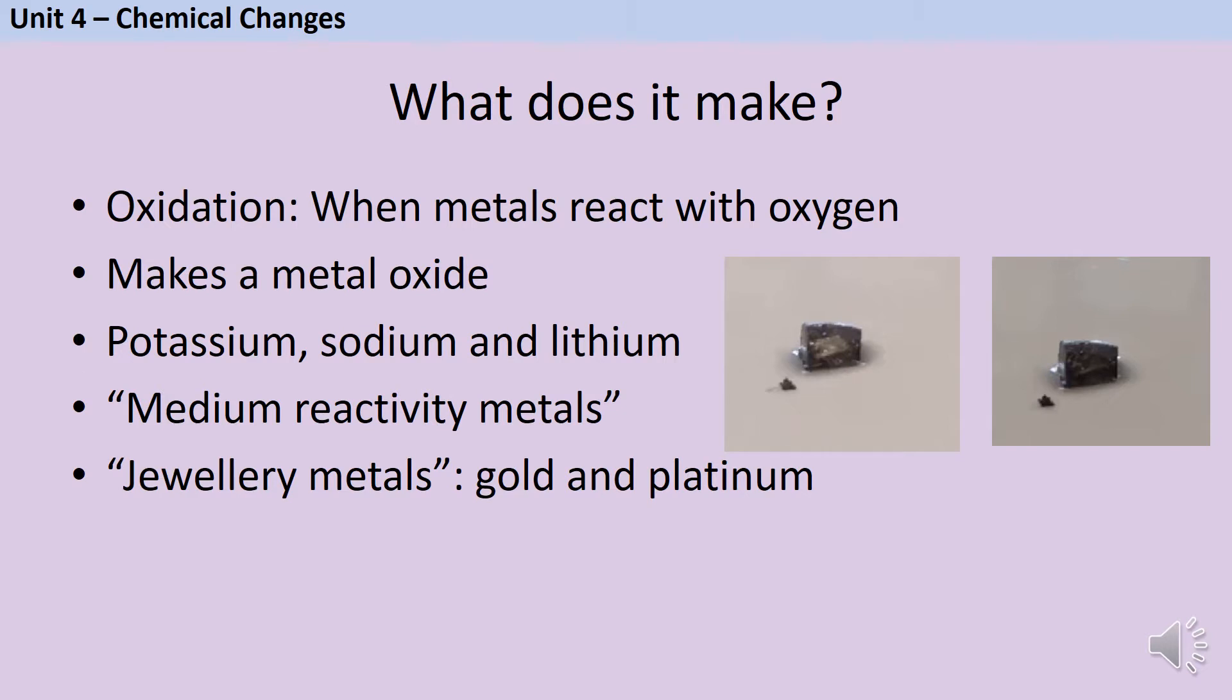When metals react with oxygen, they undergo a reaction called oxidation. And they make a product called a metal oxide. We can loosely divide our metals into three groups based on how easily they make these metal oxides.